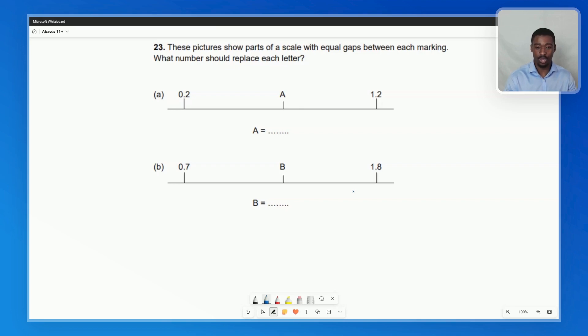So here for this question, we simply have to work out the difference between these two numbers, and then use that to work out what A and then B should be. For part A, we have 0.2 and 1.2, difference being 1, and therefore halfway should be 0.5. So this should be 0.7. And that makes sense because we go from 0.2 plus 0.5 plus 0.5. And same concept here, 0.7 to 1.8 is 1.1. Half of 1.1 is going to be 0.55. And therefore we do 0.7 plus 0.55, giving us 5, 2, carry the 1, the decimal point, 1.25. So these are our answers.